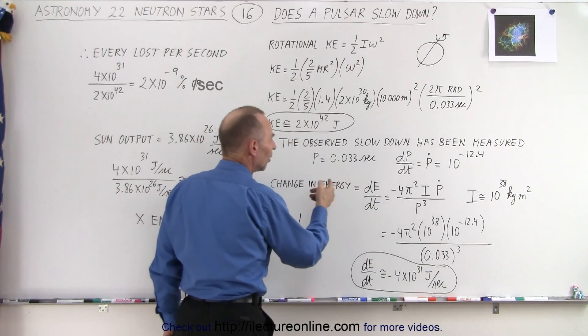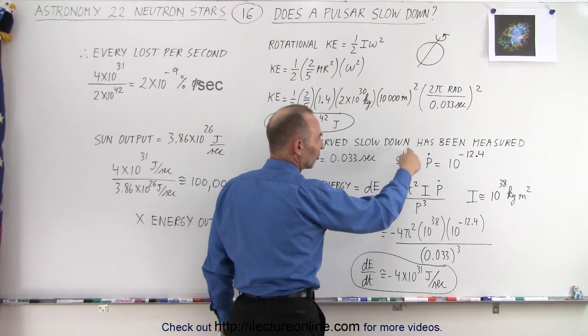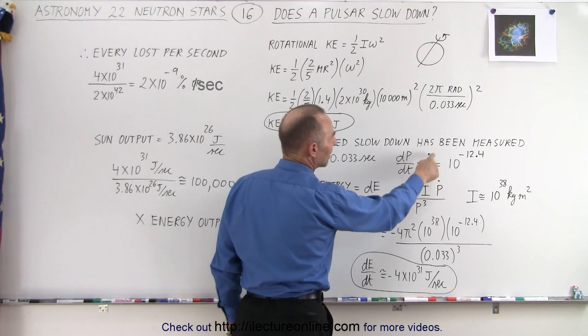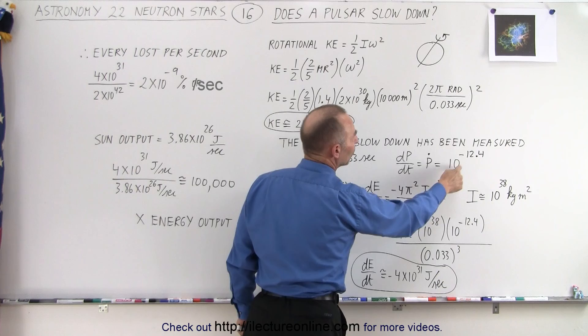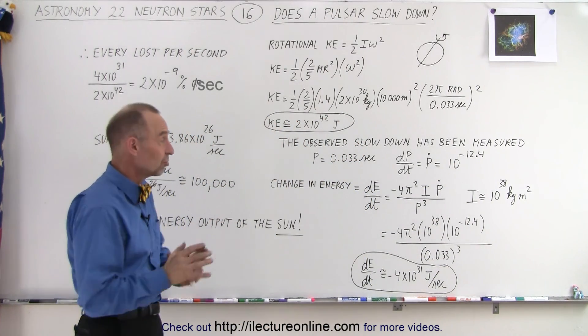P is the period. If that's the period currently, we can see that the change in the period, this is a way of writing the change in the period with respect to time, P dot, is equal to 10 to the minus 12.4. There's a very slight amount of slowdown that we can actually measure.